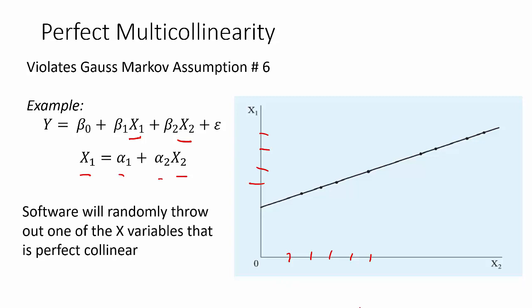The good thing is, any software you use to calculate the multivariate regression will randomly throw out one of the x's that is perfectly collinear. So we'll know quickly that we have a problem. Then you would need to go back and adjust your equation. Which of the two variables is more important for you to keep in the equation?